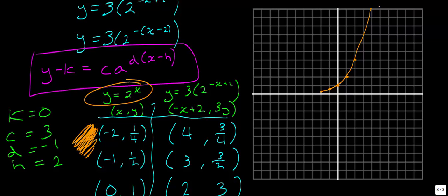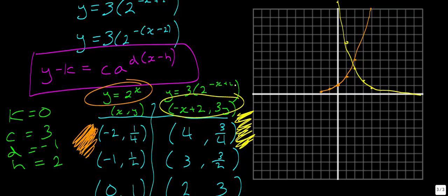Now let's graph the transformed function in yellow. The ordered pairs are: (4, three-quarters), (3, 1.5), (2, 3), (1, 6), and (0, 12). The point at x equals 0 gives y equals 12, which is near the top of our graph. In general, we can see this new function graphed in yellow, showing the transformed exponential curve.